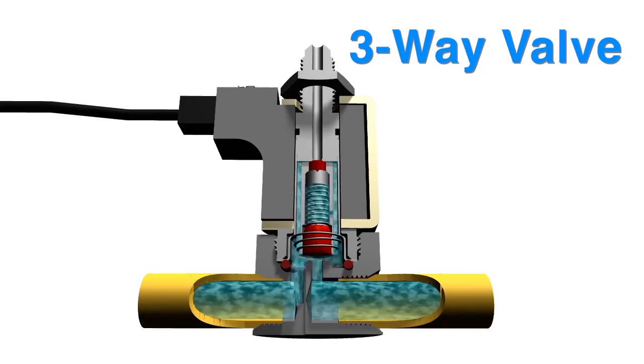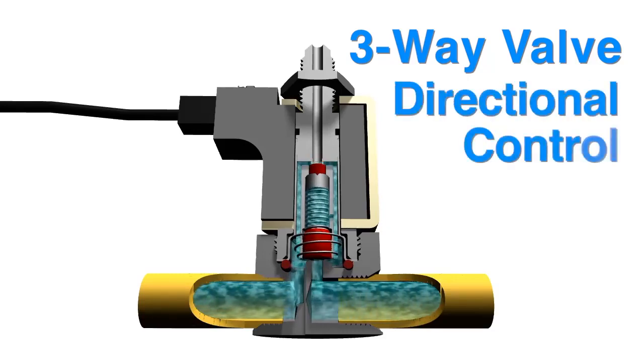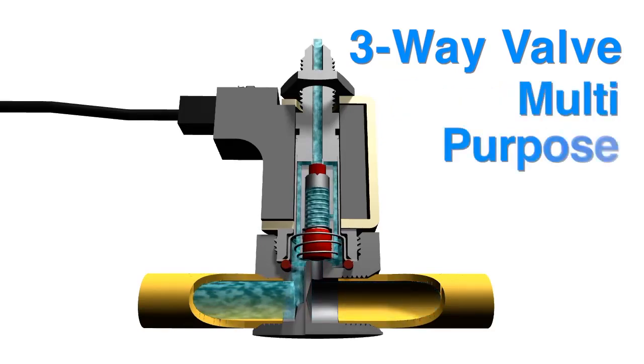There are four common types of three-way solenoid valves: three-way normally closed, three-way normally open, three-way directional control, and three-way multi-purpose.